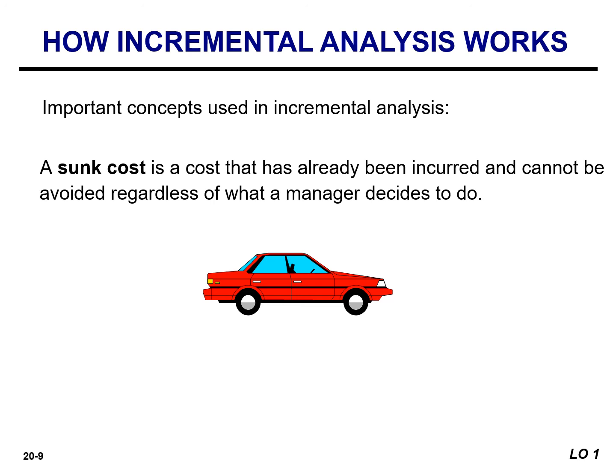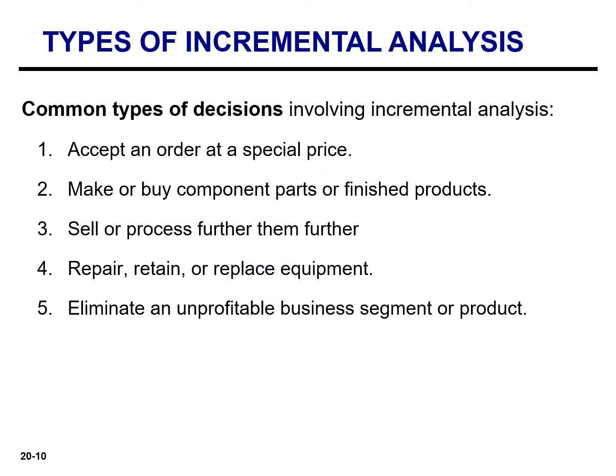Some costs are always the same no matter what alternatives are being considered — they are not relevant costs. A number of different types of decisions involve incremental analysis. We will discuss these five common types of decisions. Incremental analysis helps managers choose the alternative that maximizes net income. When looking at these decisions, we focus on relevant cost and revenue. In this chapter, we focus primarily on the quantitative factors that affect a decision — those attributes that can be easily expressed in terms of numbers or dollars. However, many of the decisions involving incremental analysis have important qualitative features that, though not easily measured, should not be ignored.